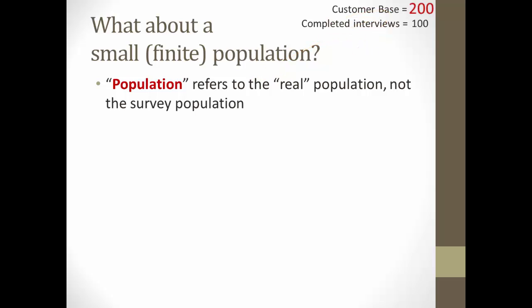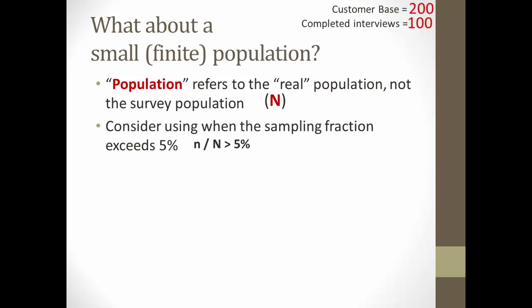Remember that we use little n to represent the number of respondents answering a question, in our case, 100. We use big N to represent the population, again, in our example, the entire customer base of 200. You would consider using a finite population correction when the sampling fraction is greater than 5%, which in our example definitely applies, because 100 is 50% of 200, much greater than 5%. Now, the tipping point is about 150,000, but you don't get very much of a correction when your population starts to get above 3,000. So my rule of thumb is, if the overall population is 3,000 or fewer, I would consider calculating a finite population correction.